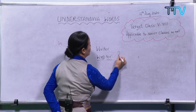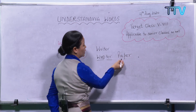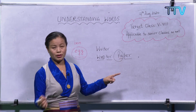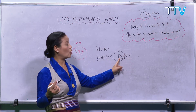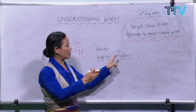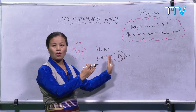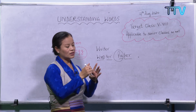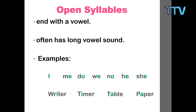For 'paper' — you break it into 'pa' and 'per'. The first syllable 'pa' ends with a vowel, making it an open syllable with a long vowel sound. The second part 'per' has a short vowel sound. So 'paper' is a two-syllable word where the first syllable is open. Similarly, 'table', 'writer', 'fighter' all follow this pattern. These are examples of open syllables.